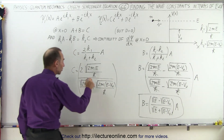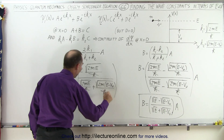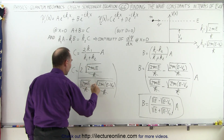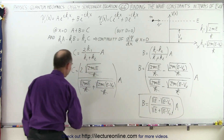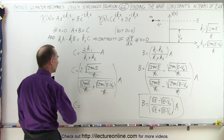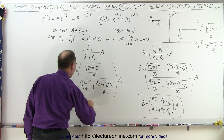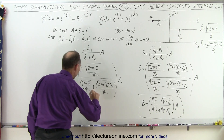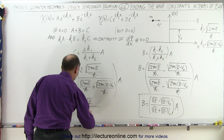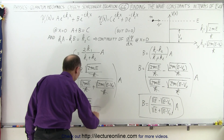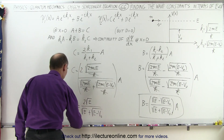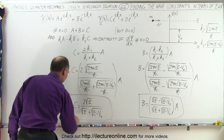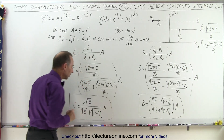Notice again the h-bars cancel out and the 2m's cancel out everywhere. So we end up with — and again, I keep forgetting to put my a down — so c is equal to: in the numerator, 2 times the square root of the energy of the particle; in the denominator, the square root of the energy of the particle plus the square root of the energy of the particle minus the potential of the barrier. So here we have our second equation, and again, make sure we put a there.